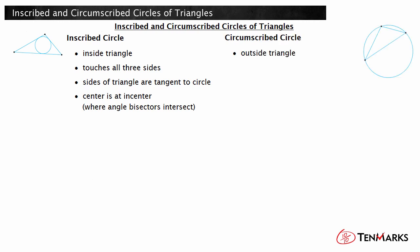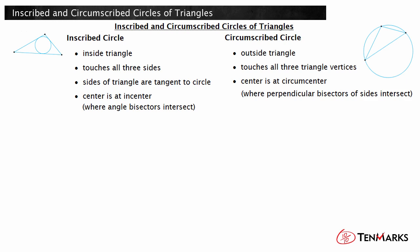Conversely, the circumscribed circle of a triangle is drawn outside the triangle. The circumscribed circle will pass through all three triangle vertices. The center of the circumscribed circle of a triangle is the circumcenter of the triangle, which is found at the intersections of the perpendicular bisectors of the sides of the triangle.